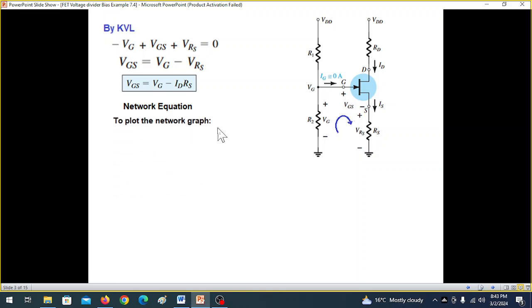And as we have done in the previous several examples, by taking a couple of values we can plot the network graph. This is an empty line and first of all we're taking ID is equal to zero. If you put ID is equal to zero, then VGS will be equal to VG. This is VGS and let's say this point is plus VG. So we will mark here, we're marking this point. So that is first.